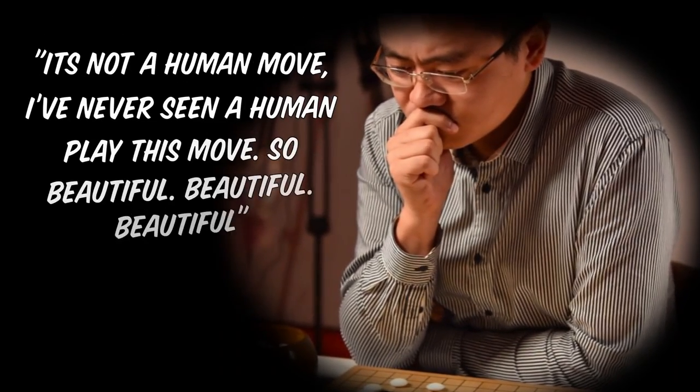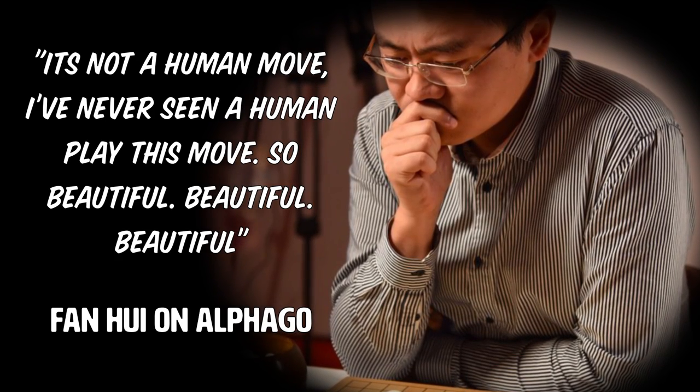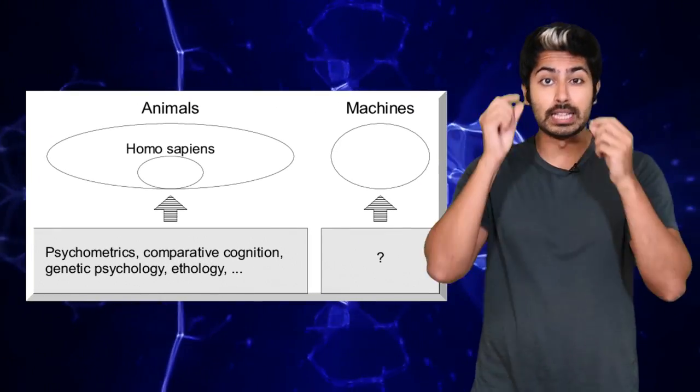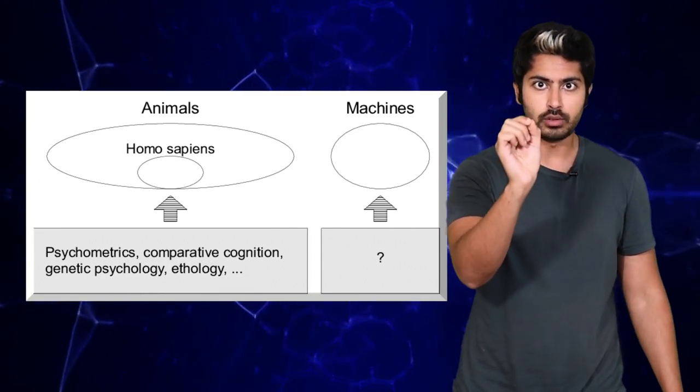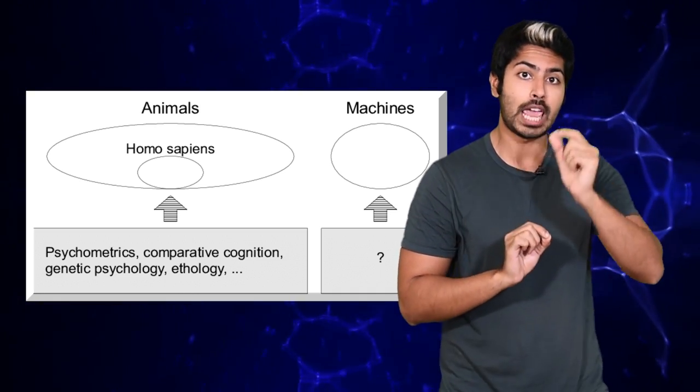One of the players, Fan Hui, said, 'It's not a human move. I've never seen a human play this move. So beautiful, beautiful, beautiful.' AI thinks you're beautiful too, Fan. Move 37 offered us a glimpse of what an intelligence looks like that thinks differently than we do, but is still very much capable of accomplishing tasks. Interestingly, Lee played his own move in a later game with AlphaGo.